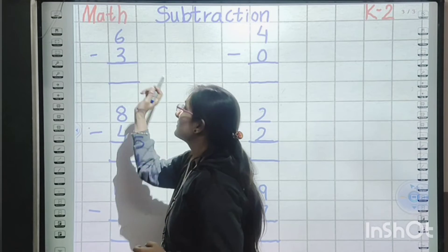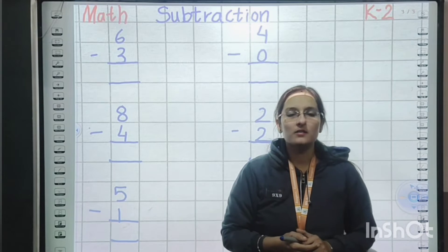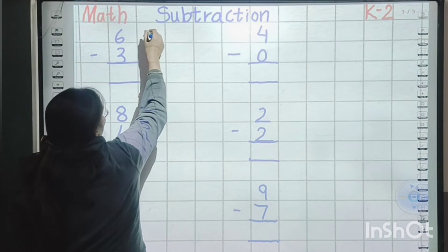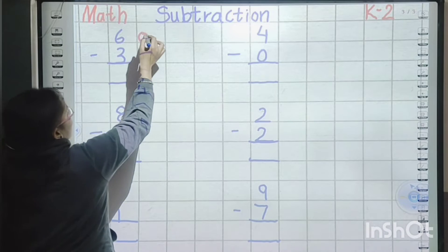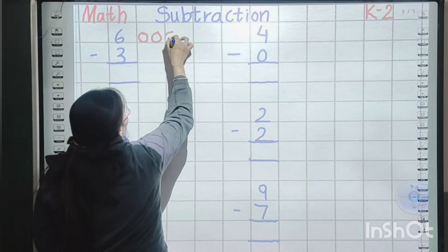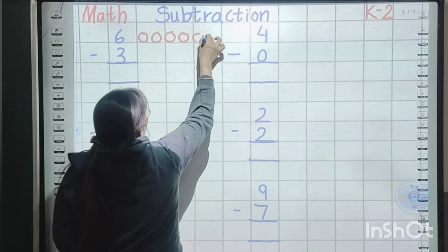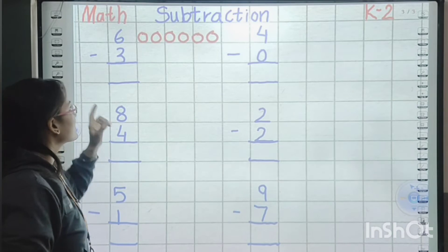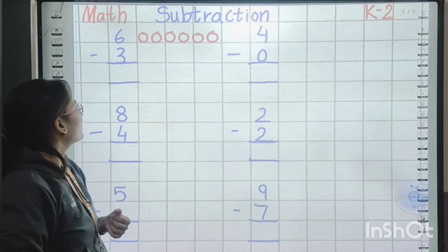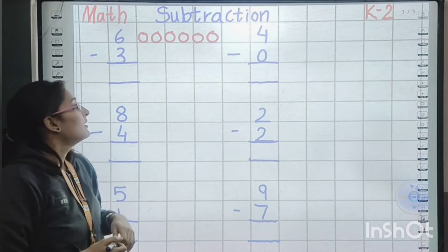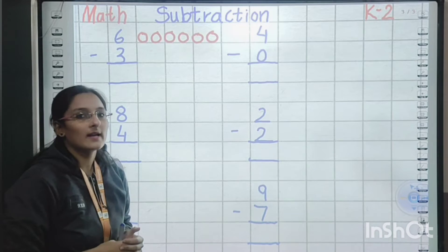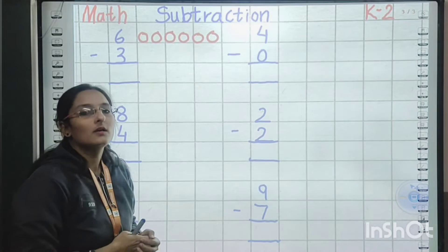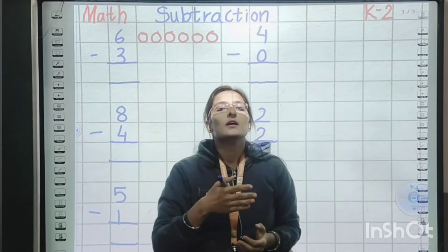So what we have to do? We have to make balls of the given big number — six. One, two, three, four, five, six. Kids, after drawing balls, check that you drew the correct number. Yes, six balls — correct. Now in subtraction we do not make balls on the second number. We have to cut the balls, because minus means we cut. We need to cut down three balls, starting from the back side.